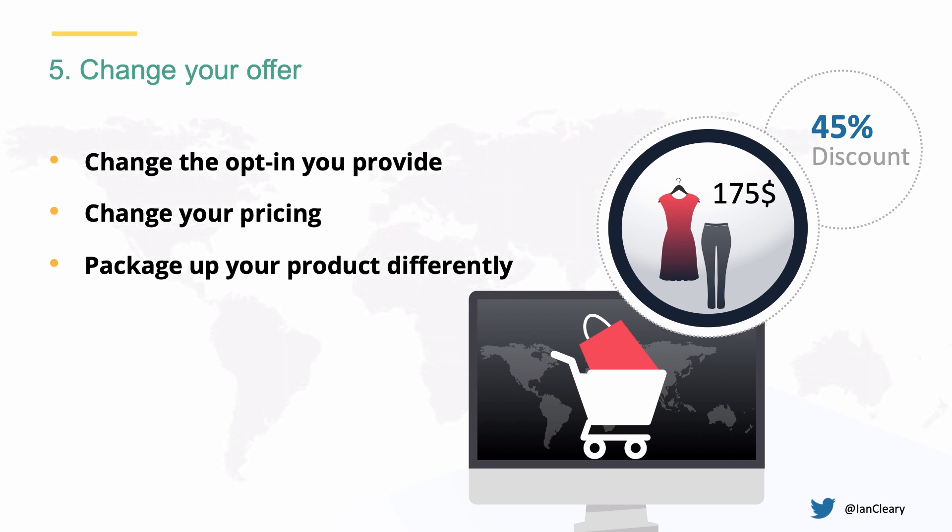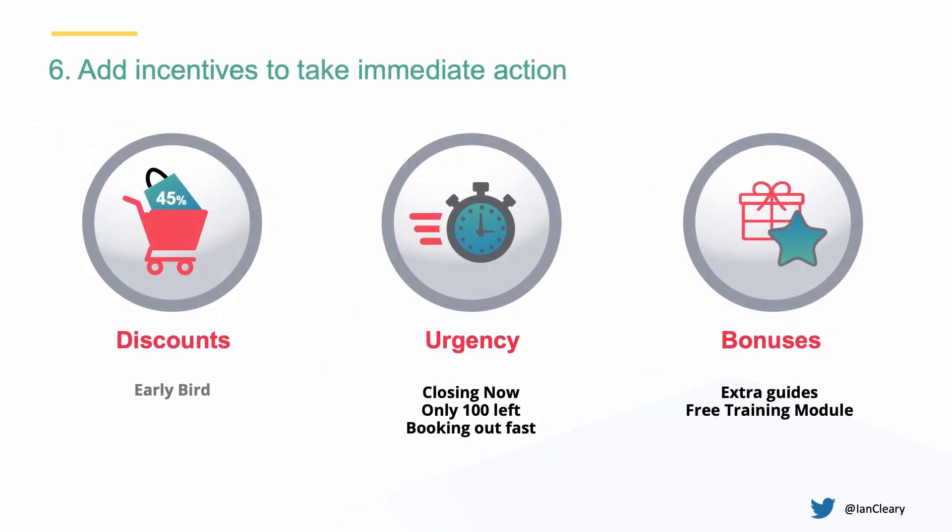Number five: change your offer. Think about the opt-in you provide and change it to see how the conversion rate improves — or maybe it declines. Change your pricing: you may be tempted to have really high pricing, but slightly lower pricing might actually get you more sales, so it's worth testing. Package up your product differently — how you present the product will make a difference in sales. Think about incentives for immediate action: early bird discounts work really well, with a lower early bird price and a higher final price if you sign up within a certain time. Urgency also helps — available until a specific time or limited to a certain number of people. Adding additional bonuses, like a specific bonus if you sign up within the next week, really helps. People need an incentive to take action now, and these tactics actually work.